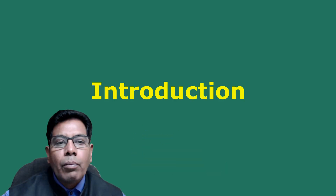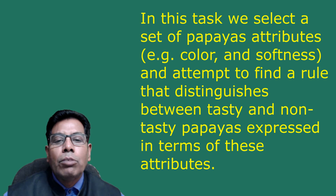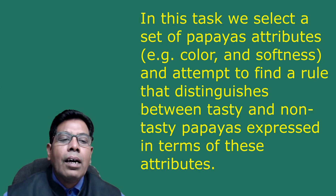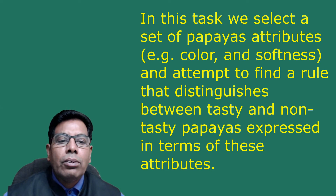The most extensively investigated learning task in machine learning or artificial intelligence is that of learning a single concept from examples. For example, one might consider the task of learning to distinguish tasty papayas from non-tasty papayas by looking at pre-classified examples. We select the set of papaya attributes — for example, color and softness — and attempt to find a rule that distinguishes between tasty and non-tasty papayas expressed in terms of these attributes.